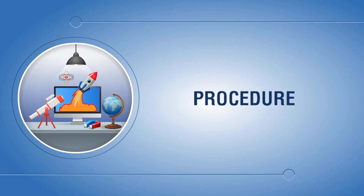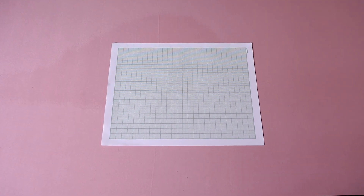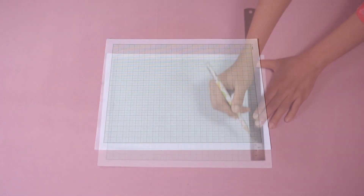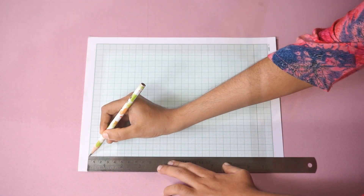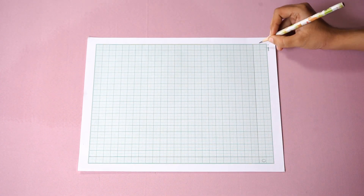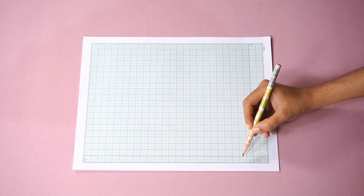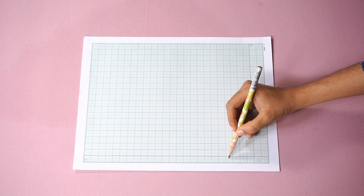Procedure: examine the data given below for the motion of a car. Observe the velocity v of the car at different times t. Notice that the velocity is in m/s and the time is in seconds. Find the range of the velocity and time. Take a graph paper and draw two perpendicular lines OX and OY to represent the x-axis and y-axis respectively. The point O where the two axes intersect is known as the origin. Count the number of divisions available on the graph paper along the two axes.